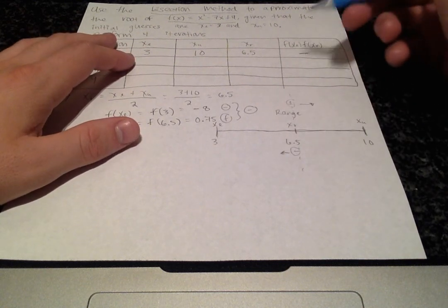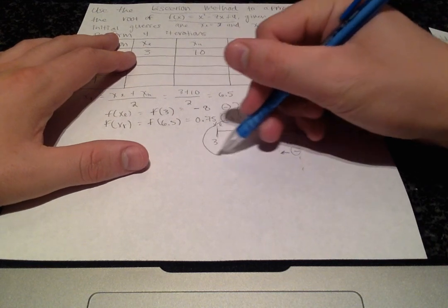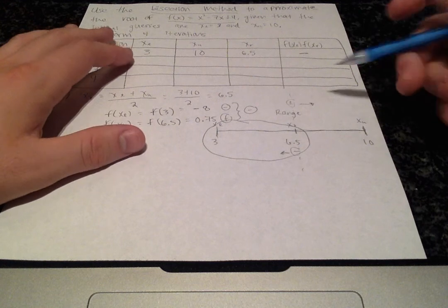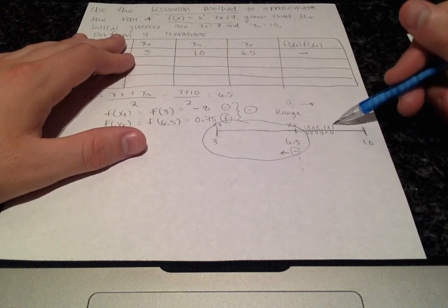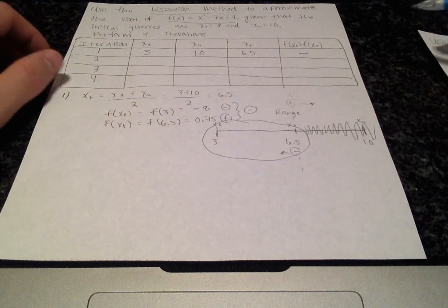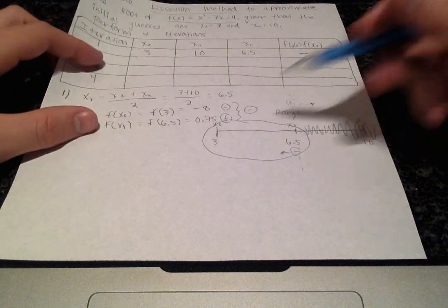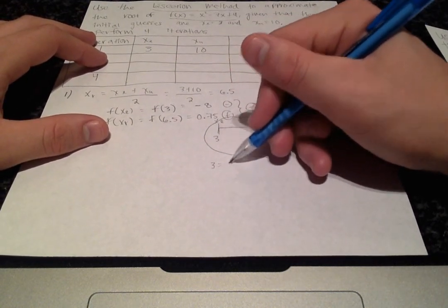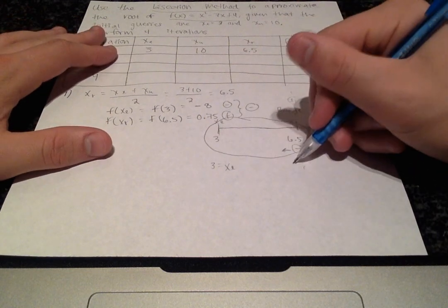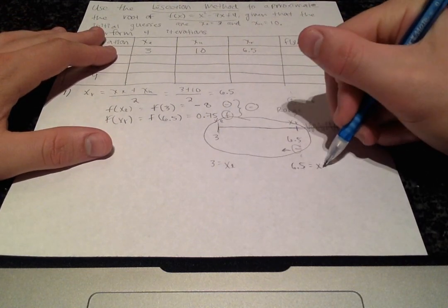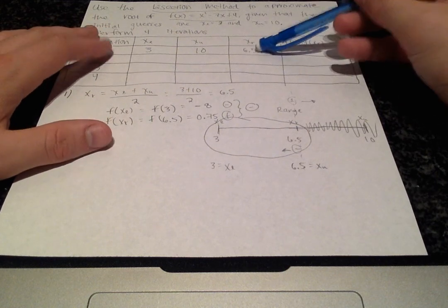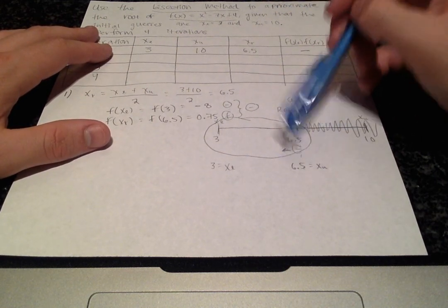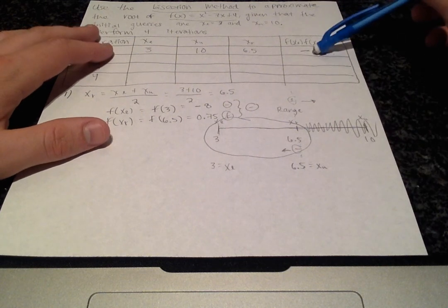For this, we got negative, so we're going to search to the left in the range of 3 to 6.5, and this will no longer be part of our search. That also means we're going to reset our limits. So 3 will be the lower limit and 6.5 will now be the upper limit. We set our xr value to the x upper value because we got a negative sign.